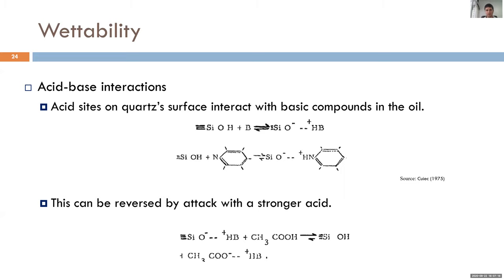For example, with nitrogen-containing basic molecules, the negatively charged silica/quartz surface can interact with a positively charged base and alter wettability. If we have a stronger acid in the environment — like acetic acid — it will compete with the silanol and restore the initial wettability of the acid site, because the stronger acid interacts more strongly with the base than the rock surface does. This is the case when injecting acids to dissolve molecules adsorbed on the rock surface — also relevant in some CO2 injection cases.